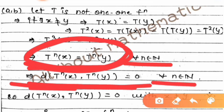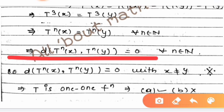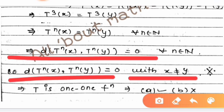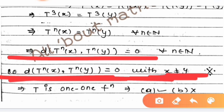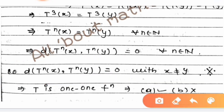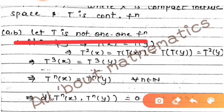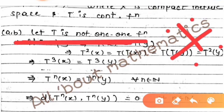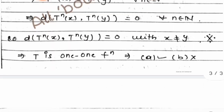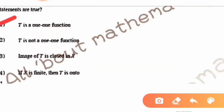We have shown: if x ≠ y then d(T^n(x), T^n(y)) = 0 for every n in the natural numbers, which matches the given condition. However, since x ≠ y, the infimum should not equal zero — this is a contradiction. Therefore our assumption that T is not one-one is wrong, and the correct statement is that T is a one-one function.